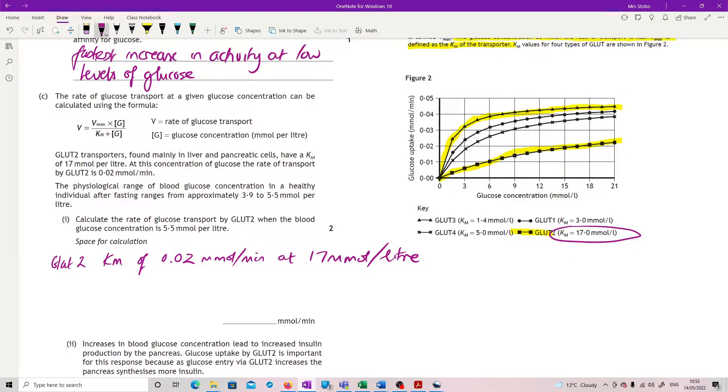So instead I have to use the fact that Km is half Vmax. So our Km at 17, our rate at Km we're told is 0.02, so that means our maximum velocity is 0.04. Now you had to do a lot of work to get that far. I thought it was not lovely.